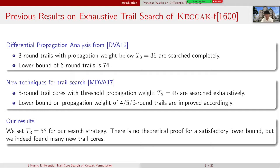As for our result, we set the threshold to be 53 for our search strategy. There is no theoretical proof for a satisfactory lower bound, but we indeed found many new trail cores.